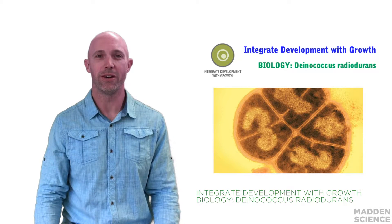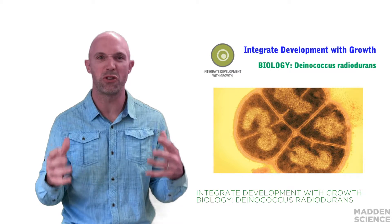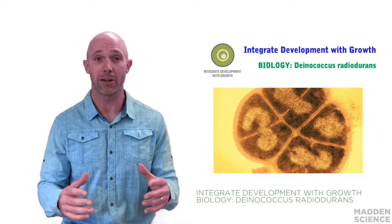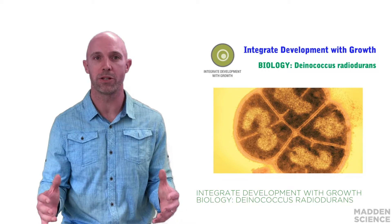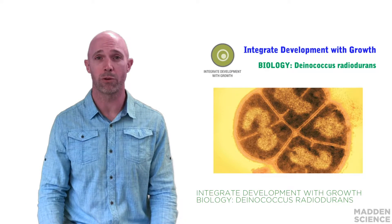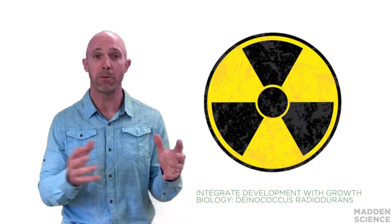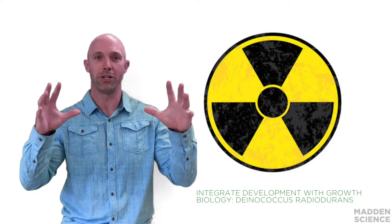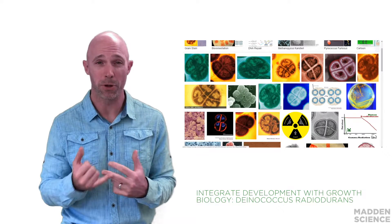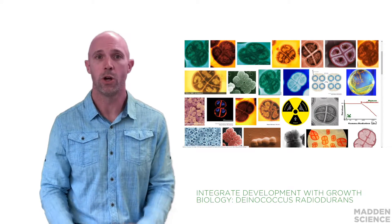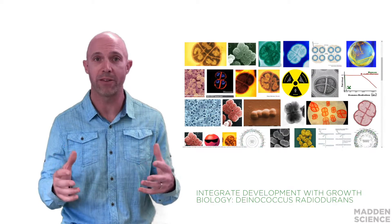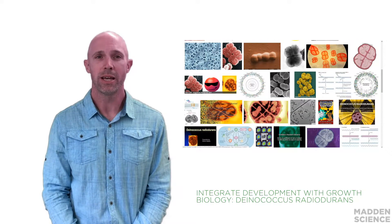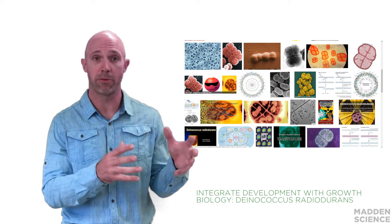Deinococcus radiodurans is arguably the toughest, most durable, most resistant life form on earth. It's an elegant biology example of the life's principle: integrate development with growth. This extremophile bacterium is able to withstand extreme conditions, including chemical insults in the form of radiation, cold, vacuum, acids, and dehydration. Because of this high degree of resistance, it is called a poly-extremophile.